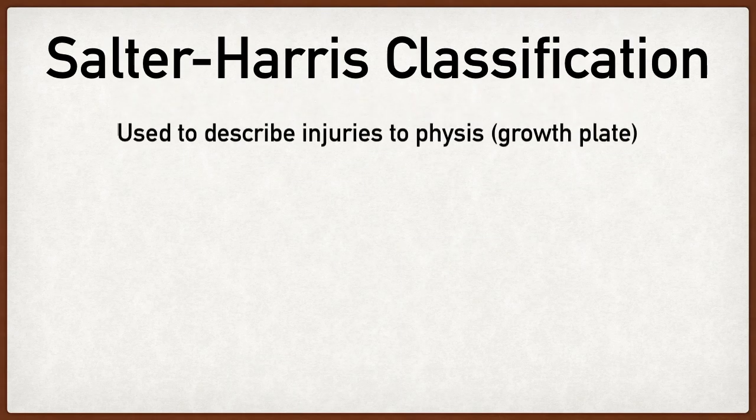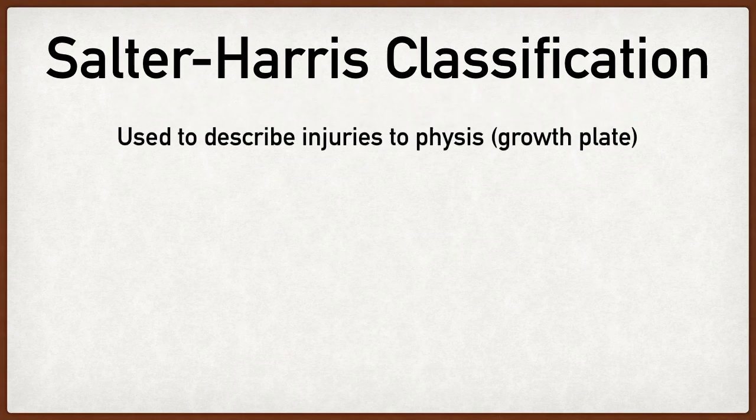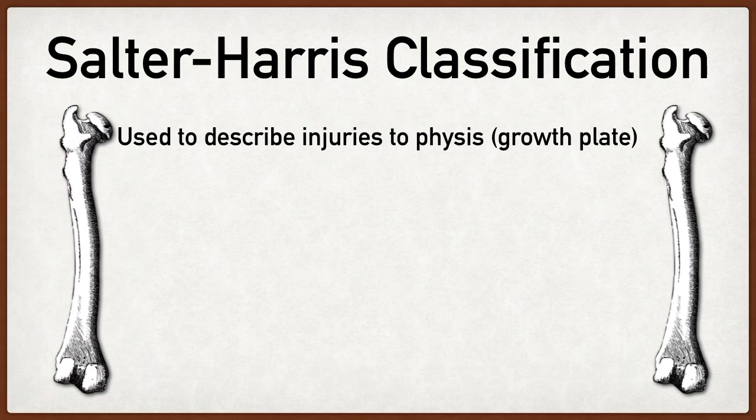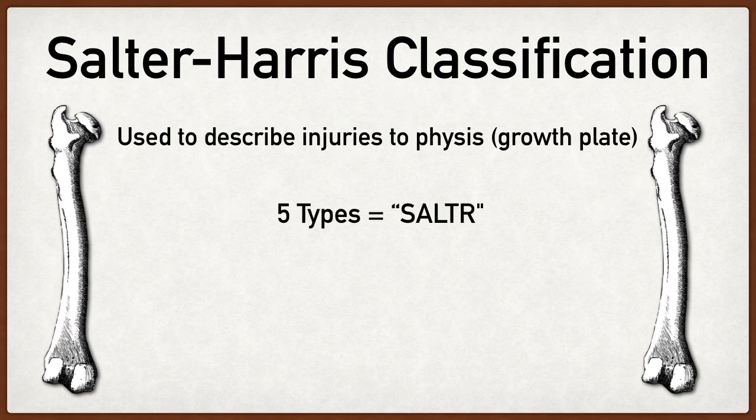The Salter Harris classification system is used to describe different injuries to the growth plate, and there are five different types. The easy way to remember each type is to use the mnemonic SALTER, which is really nice because it uses the name.